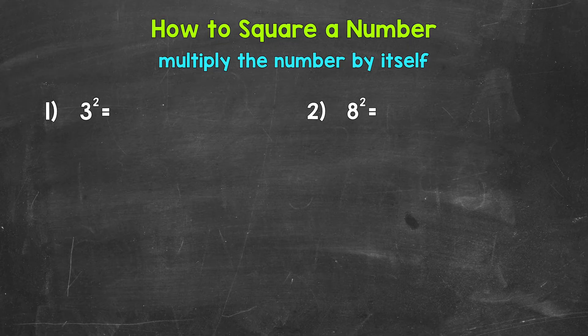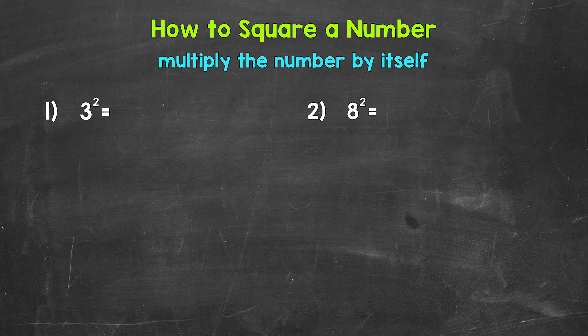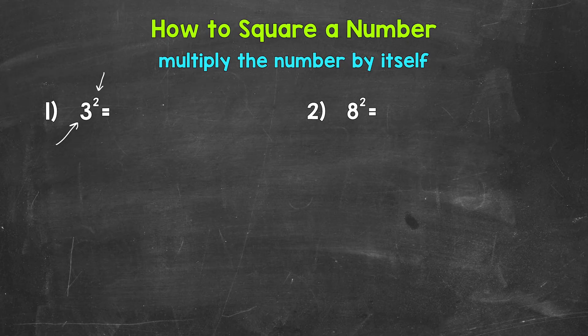Let's jump into our examples and see exactly what this looks like. Starting with number 1, where we have 3 squared. Now when working with exponents, the bigger number to the left is called the base. The smaller number to the right is called the exponent.